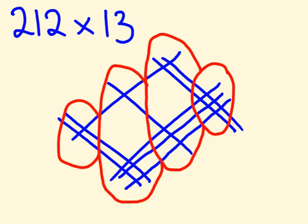And our answer is as follows. We have 1, 2, 3, 4, 5, 6 in the units. We have 1, 2, 3, 4, 5 in the tens. We have 1, 2, 3, 4, 5, 6, 7 in the hundreds. And 1, 2 in the thousands. So, the 2,756.